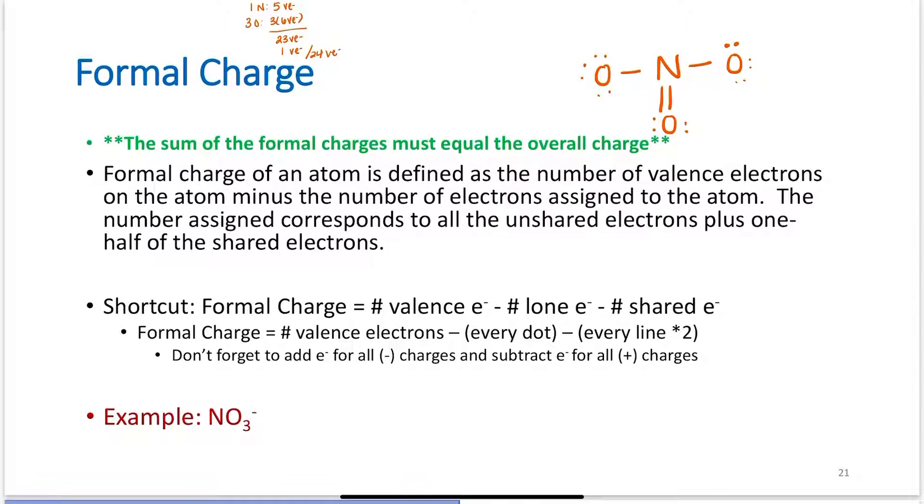Verifying each atom has 8 electrons: the nitrogen has 1, 2, 3, 4, 5, 6, 7, 8. Each oxygen has 1, 2, 3, 4, 5, 6, 7, and 8. Everyone has their octets. But now I want to look at formal charge.